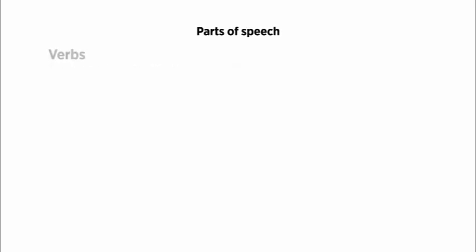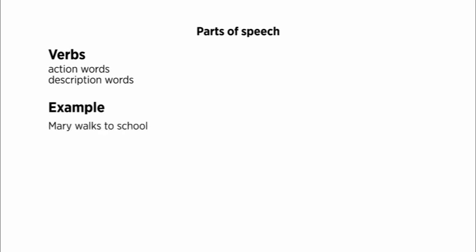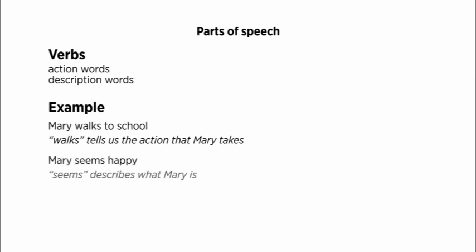Another category of words is verbs. Verbs are either action words or description words. For example, Mary walks to school — walks tells us the action that Mary takes. Mary seems happy — seems describes what Mary is. So that gives you an idea of what parts of speech are: figuring out what an individual word is, what type of word it is. And to do this, you just have to memorize some definitions.